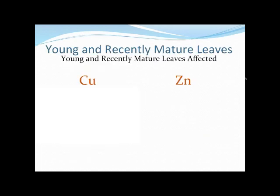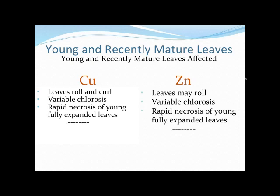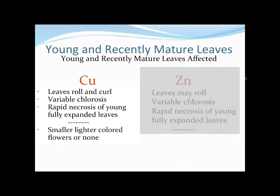Copper and zinc share leaf curl and variable chlorosis. For copper specifically: rapid necrosis of the fully expanded leaves and smaller, lighter-colored flowers or no flowers at all. That's similar to what we see with sulfur, but here it's showing up on the most recently matured leaves with these other symptoms, whereas with sulfur it's coming to the whole plant.